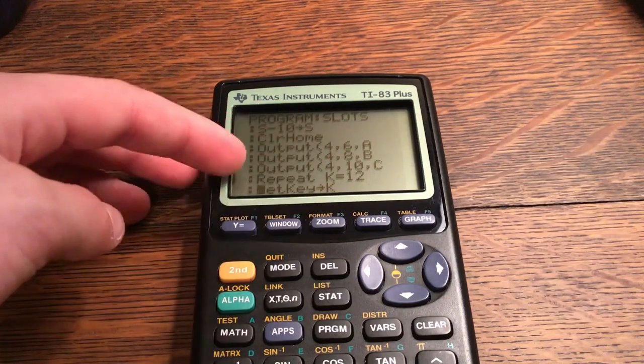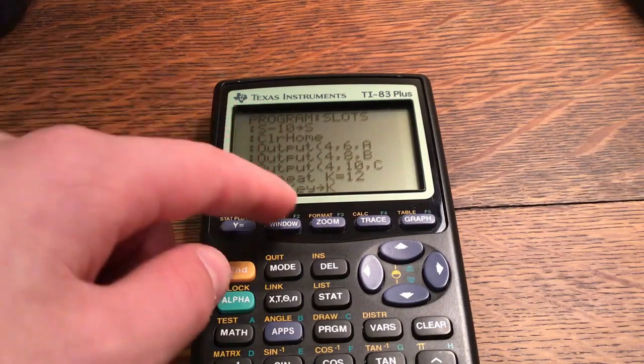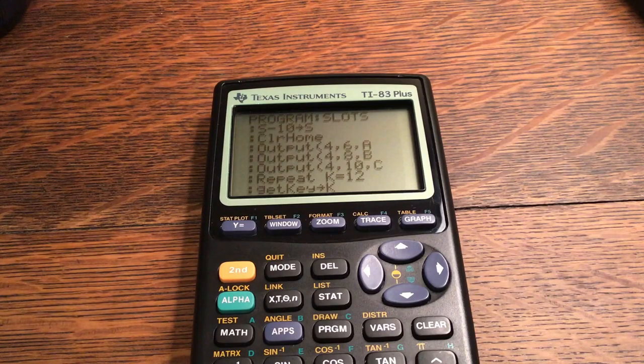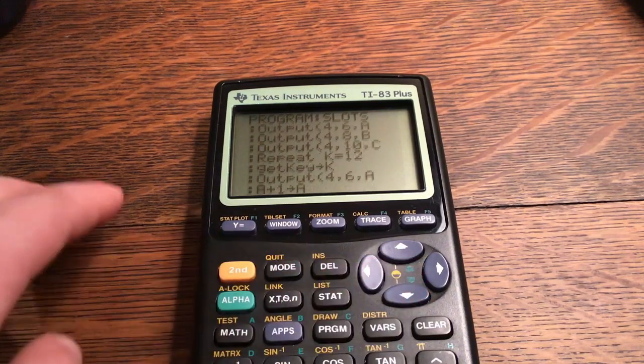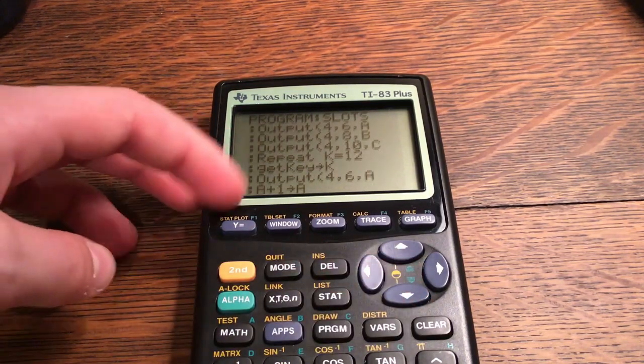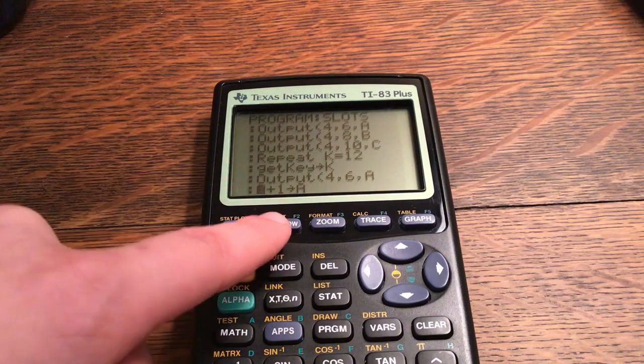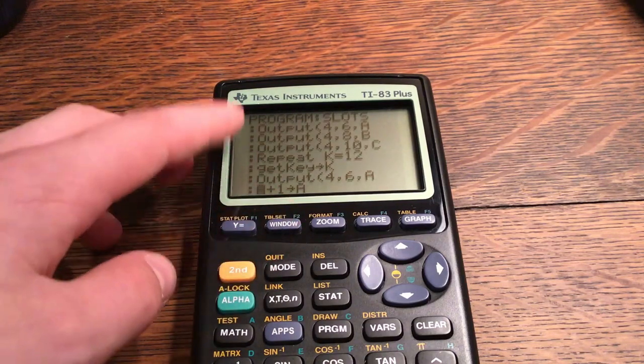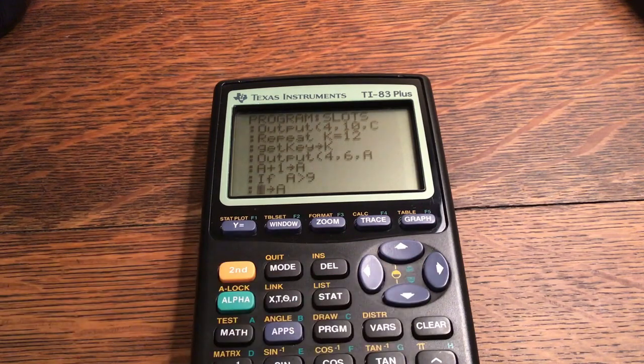If you want to just reveal one at a time, you can get rid of this stuff right here because it does actually do that in the repeat loops. So repeat until K is equal to 12. So repeat this until the key is equal to 12.